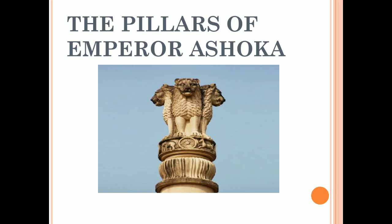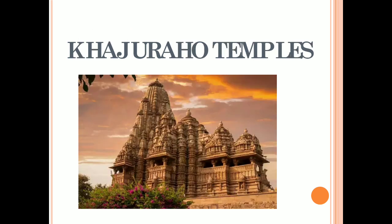The pillar found at Sarnath near Varanasi was built around the 3rd to 4th century BC, before the birth of Christ. It has four lions looking out in the four directions. This is now our national emblem and we can see this emblem on our coins and currency notes.